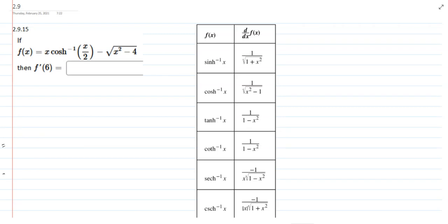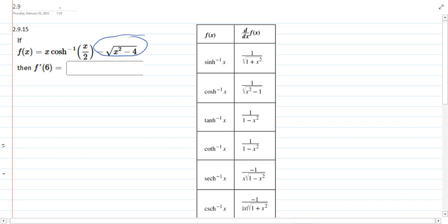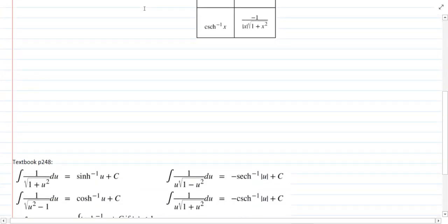We're going to do 2.9.15, which is the derivative of a hyperbolic inverse trig function. There is a second part to this question, which I'm going to skip because we covered that earlier. I just want to focus on this first part here. So one thing you're going to need is this table right here, which is from page 248.